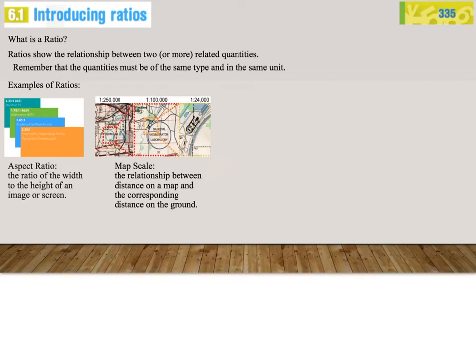The map scale is the relationship between distance on a map and the corresponding distance on the ground. For example, one unit on this map is the same as 250,000 of the same unit on the ground. On this map of ours, one unit on the map is the same as 100,000. Please take some time and investigate this further, but we will do so in exercise 6.4.